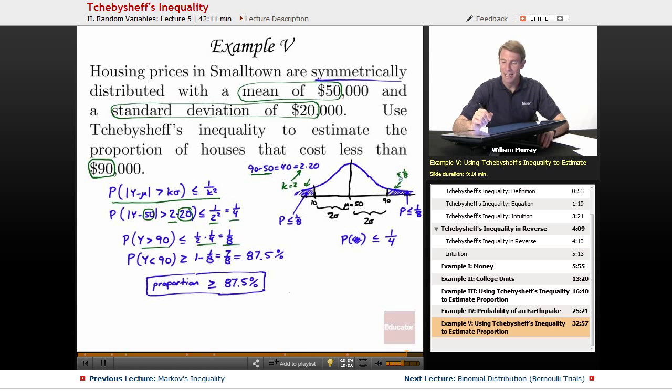And that was describing the number of houses or the proportion of houses that cost more than $90,000. I want to find the proportion of houses that cost less than $90,000. So I switch that around. Instead of talking about 1 eighth, I talk about 1 minus 1 eighth. And instead of talking about less than or equal to, I have a greater than or equal to. And of course, 1 minus 1 eighth simplifies down to 87.5%. So my answer here is, I don't just say 87.5% is my answer. My answer is that at least 87.5% of the houses in this town cost more than $90,000. And the at least part is very important part of the answer there.